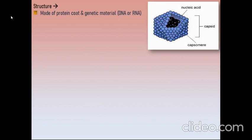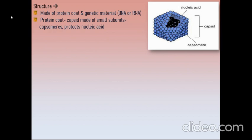Let's see their structures. Viruses are made up of a protein coat and the genetic material, DNA or RNA. Generally, the nucleic acid or genetic material is covered by the protein coat, known as the capsid. The capsid is made up of many smaller subunits known as capsomeres. The capsid protects the nucleic acid. The capsomeres are arranged in helical or polyhedral geometric forms.